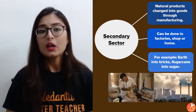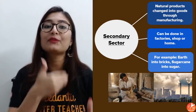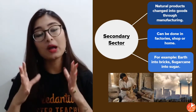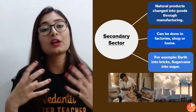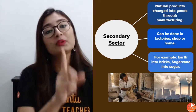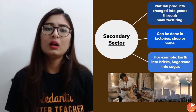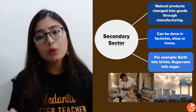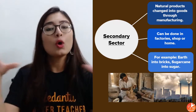Then we have the secondary sector. Primary was the first, the basic, the fundamental — so secondary is the stage that comes after primary. Whatever raw materials we obtained are now processed in the secondary sector, and something further is created out of them — goods are manufactured using these natural products from the primary sector. This can happen anywhere: it doesn't have to be in a factory. It can happen in your shops, your home, or factories.